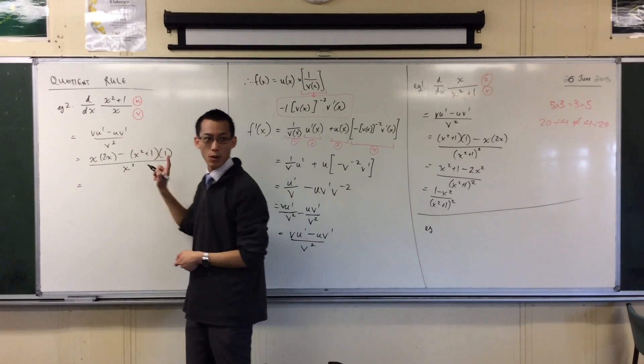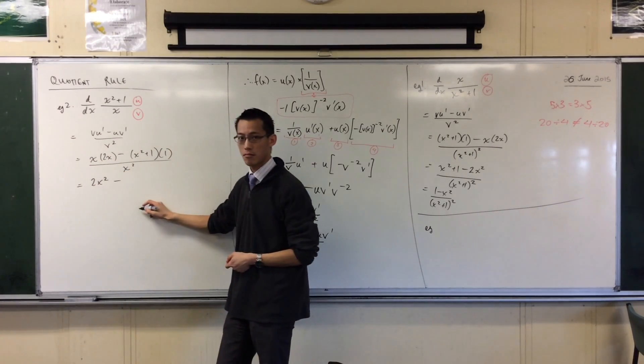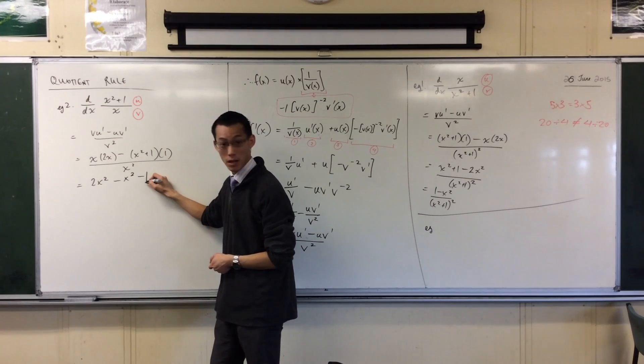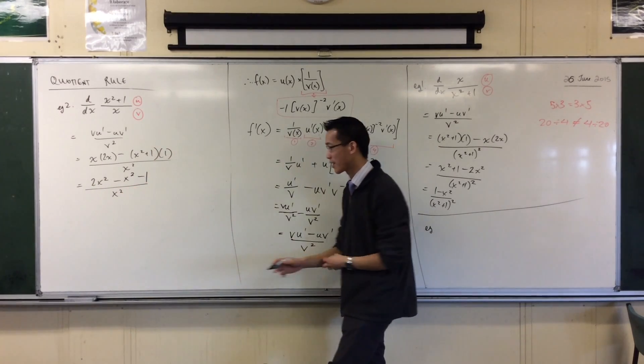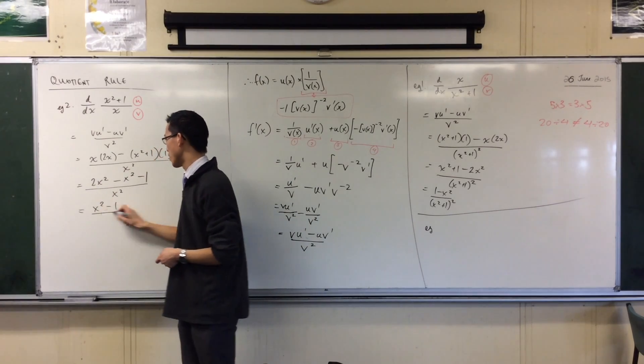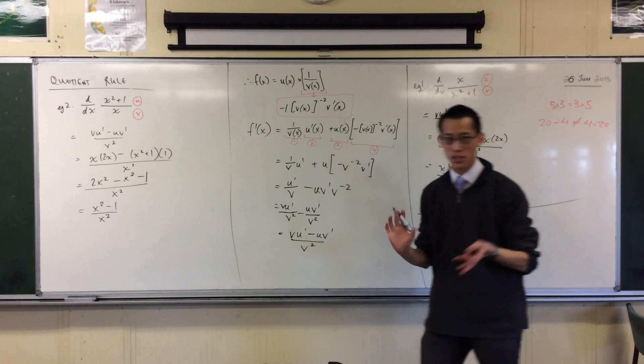Tidy me up on the top here. What have I got to start with? 2X squared. Minus X squared, minus 1. All over X squared. Watch for those brackets. I can tidy up a little further. X squared take 1 on the numerator. And I'm kind of finished.